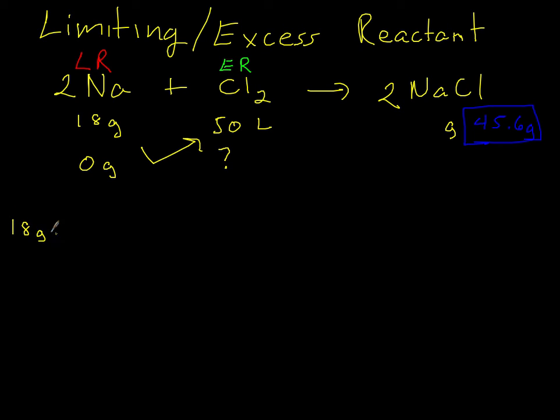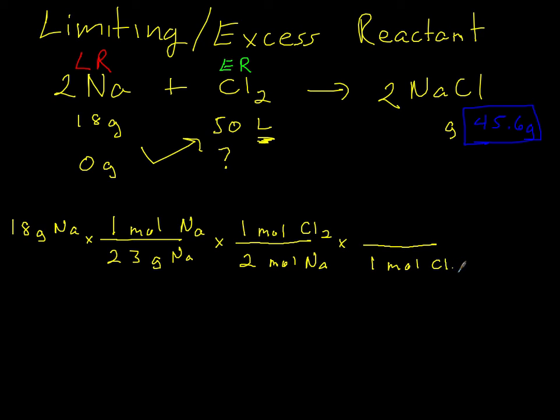So 18 grams of sodium, I'll do the molar mass of that which is 23 to 1 mole. Then we have a ratio of 2 to 1, 2 moles of sodium to 1 mole of chlorine. And then the chlorine is in liters - this is important. So we need to go to whatever it's in so we can make a comparison. Let's convert our chlorine to liters: 1 mole of chlorine to 22.4 liters of chlorine. That gets you 8.8 liters of chlorine.